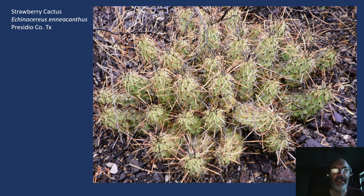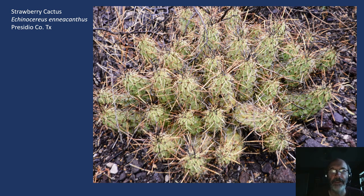The strawberry cactus, Echinocereus enneacanthus, is fairly widespread just to the south of El Paso County and down into Big Bend. A mound of these in full bloom is really spectacular — lots and lots of large magenta flowers. The spination is not quite enough to conceal the plant, which is one of the characteristics that helps identify it, as opposed to coccineus.